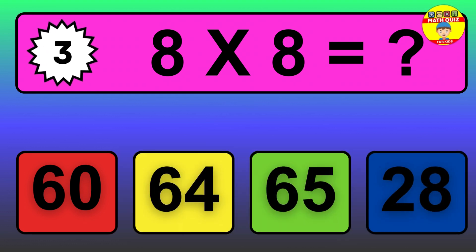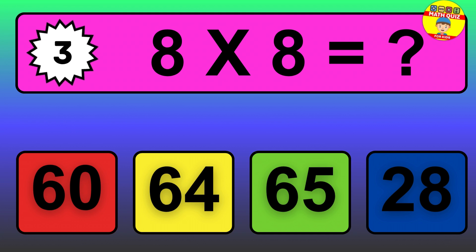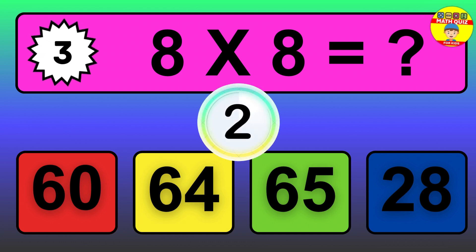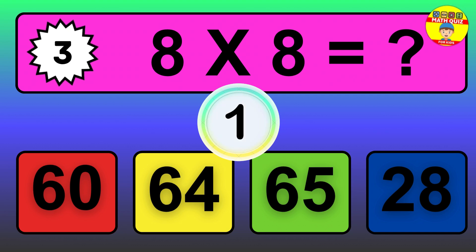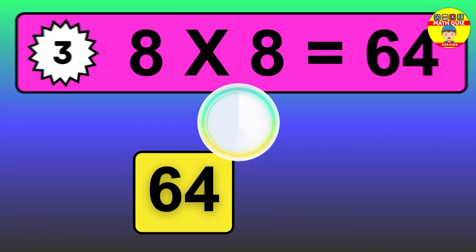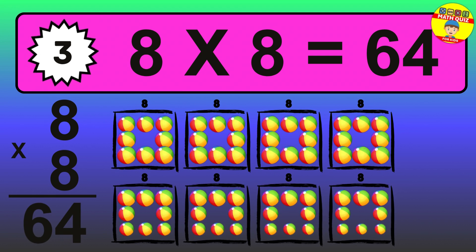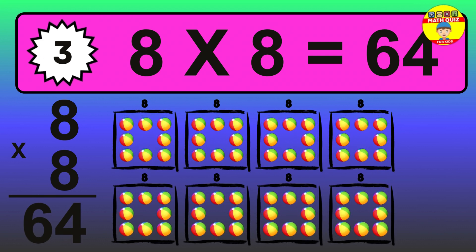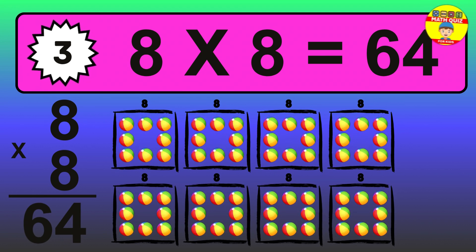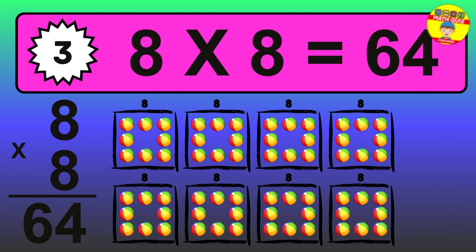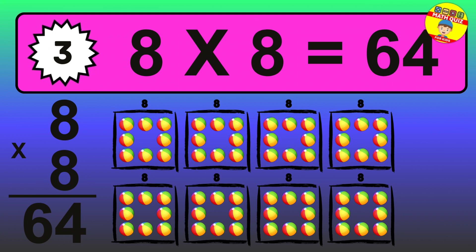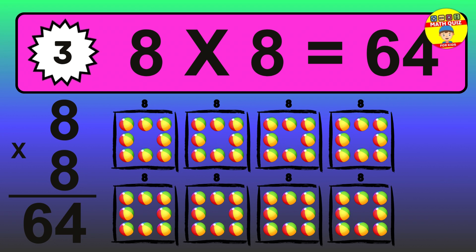Question 3. 8 times 8 equals what? The answer is 8 times 8 is 64. To calculate, we have 8 groups with 8 balls each one. So, how many balls do we have? 64 balls.